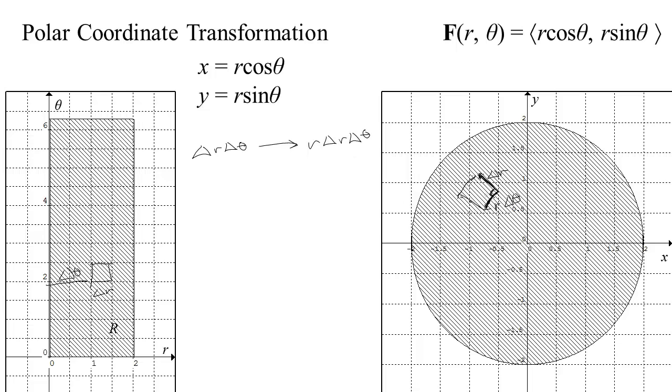They can do that because when you make changes in r and changes in theta, the corresponding directions in x-y space are perpendicular, and so you can just multiply them.